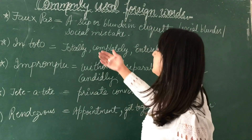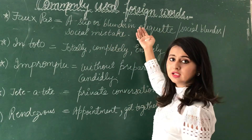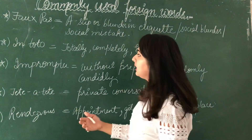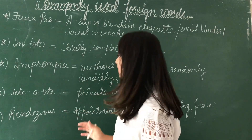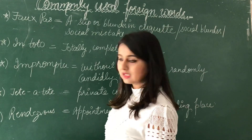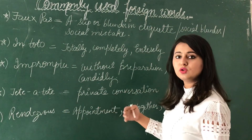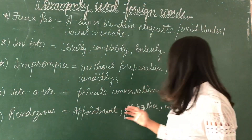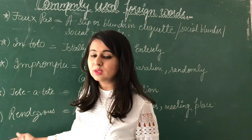Let's revise all the words once again. First, faux pas means a slip or blunder in etiquette — something socially or ethically wrong. Next, in toto means entirely, completely. Impromptu means without preparation, doing something randomly. Tête-à-tête is a private conversation we don't want to disclose to everybody. And rendezvous means an appointment, a get-together, or a meeting place.